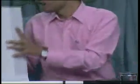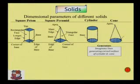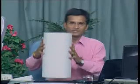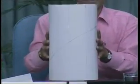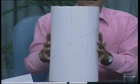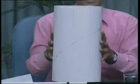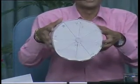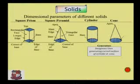In the case of a cylinder, the top view is a circle and the front view is a rectangle. If you look from the front, it appears as a rectangle with width equal to the diameter of the cylinder and height equal to the height of the cylinder. If you look from the top, it appears as a circle. So these are the projections of a cylinder.